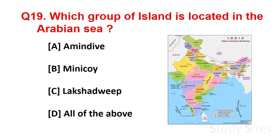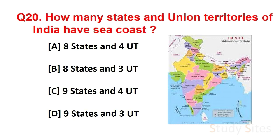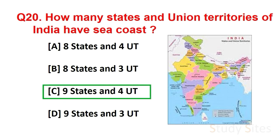Question number 19. Which group of islands is located in the Arabian Sea? Amindivi, Minicoy and Lakshadweep are located in the Arabian Sea. Question number 20. How many states and union territories of India have a coast? Answer is 9 states and 4 union territories.